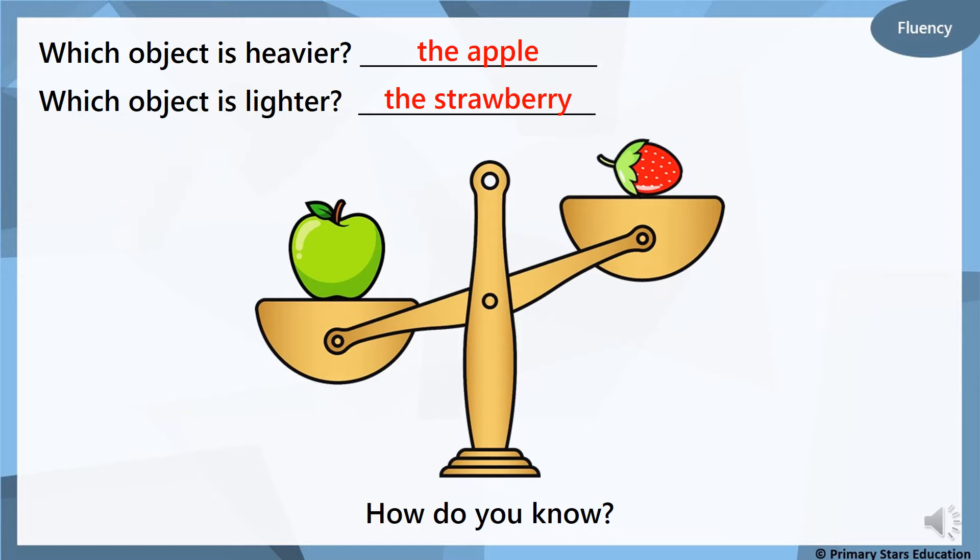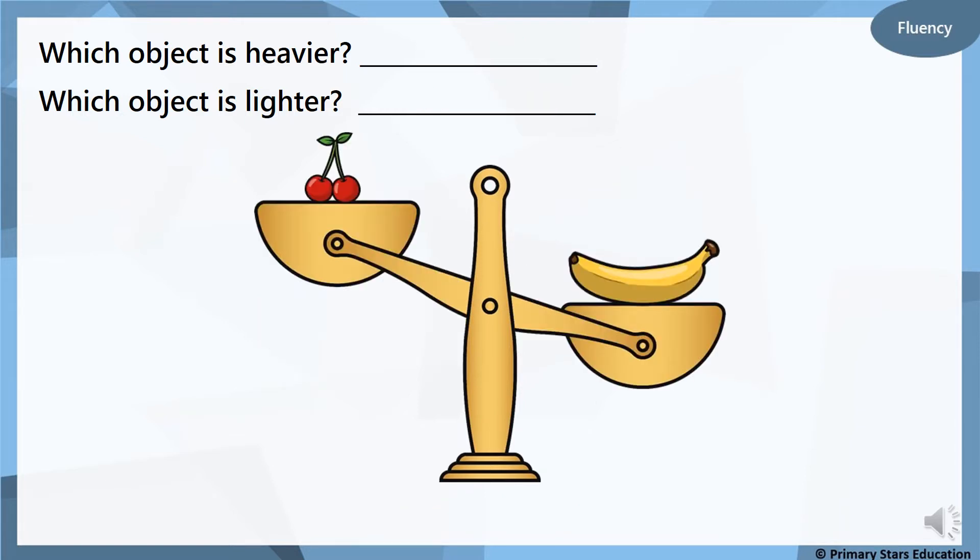Think about how you know this. Which object is heavier and which object is lighter? You can pause it, have a think if you need to. The banana is heavier and the cherries are lighter. How do you know? Can you explain this to somebody at home?